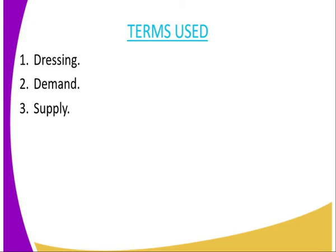Then demand — demand refers to the quantities of commodities that the buyer is willing to buy and able to buy at a particular price. Then supply, on the other hand, refers to the quantity of commodities that the seller is willing to supply to the market in a given time.